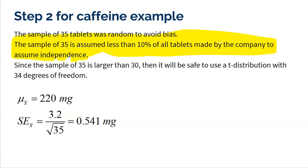Now, our t-distribution will have 34 degrees of freedom because we had 35 as our sample size minus one is 34 degrees of freedom.